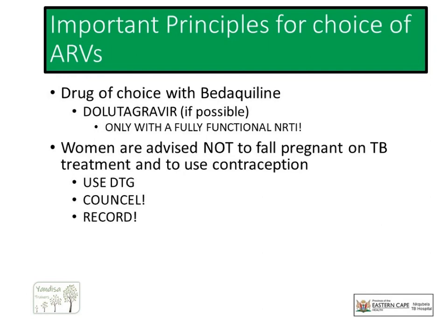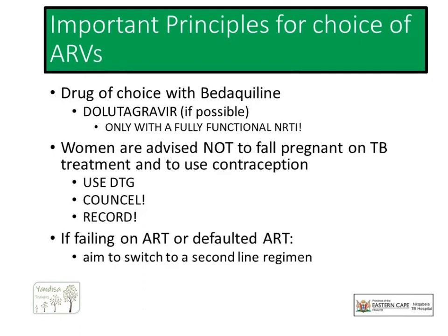Dolutegravir is therefore an appropriate choice for new initiation in most patients weighing over 20 kilograms. It is still important to counsel women that when they are eventually off DRTB treatment and want to fall pregnant, they would need to go to their health facility to discuss whether dolutegravir is still a good option. Be sure to record that conversation in your clinical notes as per the ARV guidelines. Dolutegravir will also appear in a new, simpler and stronger second-line regimen, and so we will also aim to change any patient who is virologically failing or who has defaulted treatment to the new second-line if possible.